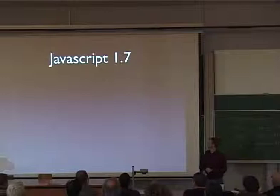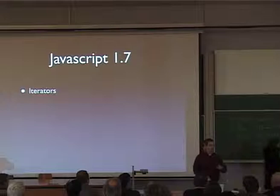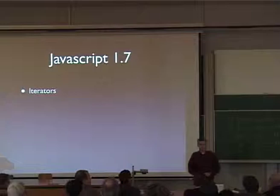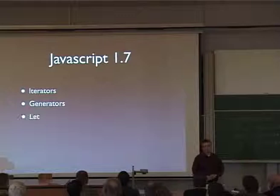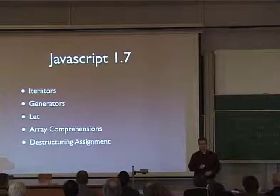How many Python programmers are here, or have at least a cursory understanding of Python? A lot of the stuff you're going to see in JavaScript 1.7 — a lot of the things that make JavaScript 1.7 fun — is heavily borrowed from Python. So: iterators, generators, let expressions, array comprehensions, destructuring assignment. I promise I'll go through these in a little bit more detail than a bullet list.